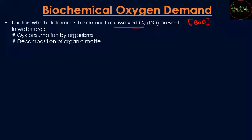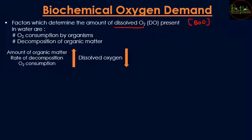The factors that determine the amount of dissolved oxygen depend on the oxygen consumption by organisms and the decomposition rate. If decomposition is high, that means organic matter is more, and oxygen consumption increases. When biodegradable matter increases in a water body, the rate of decomposition increases, microbes increase, and oxygen consumption increases. As a result, the dissolved oxygen decreases, creating a threat to aquatic life.